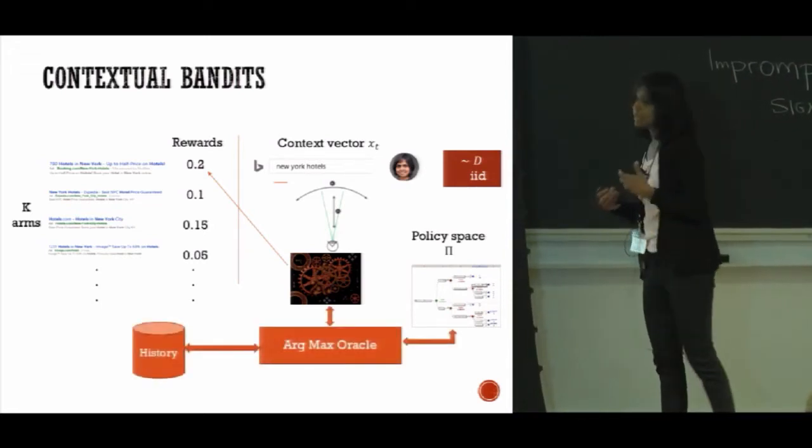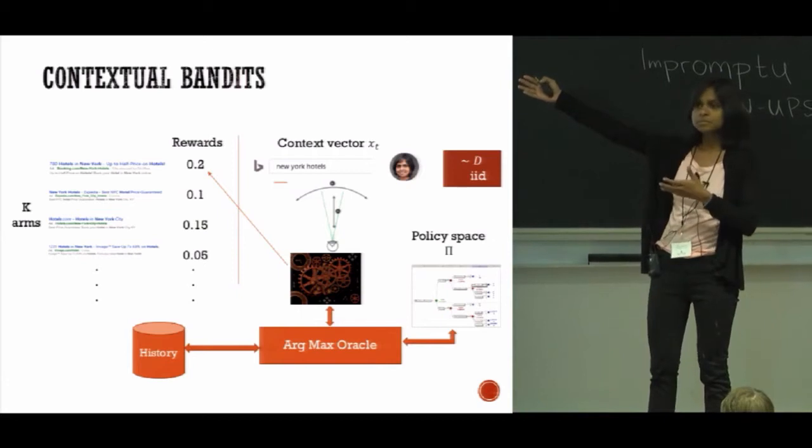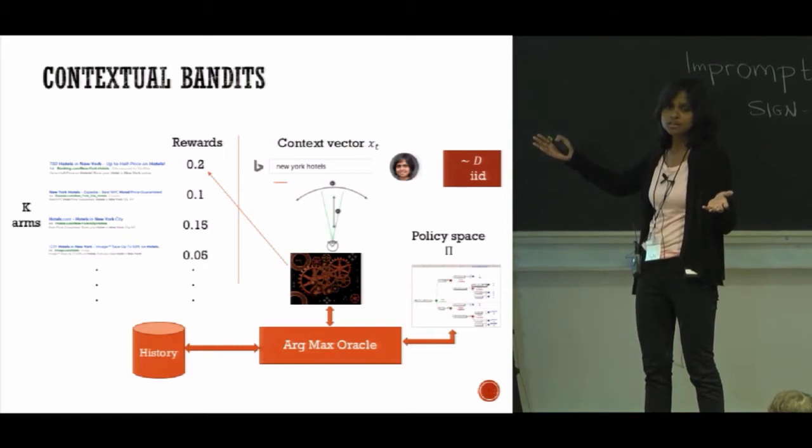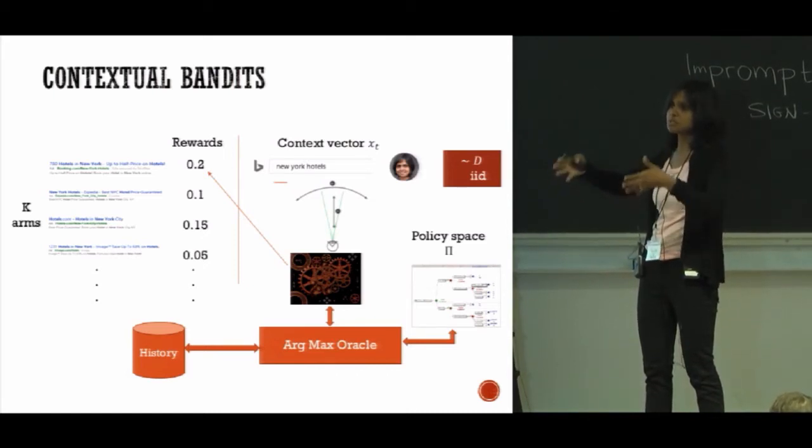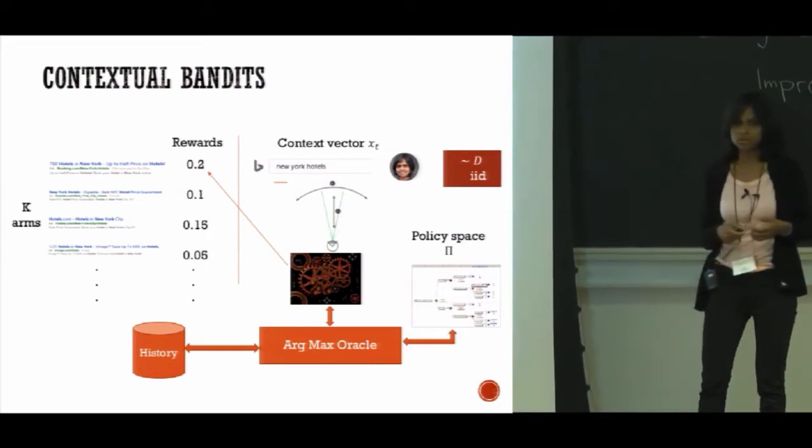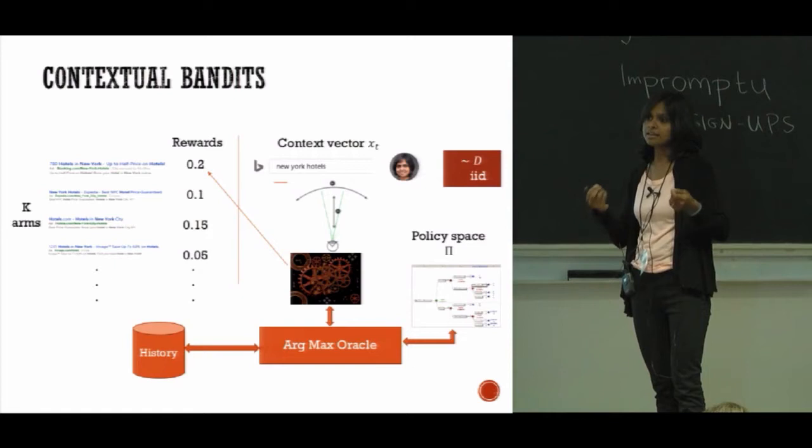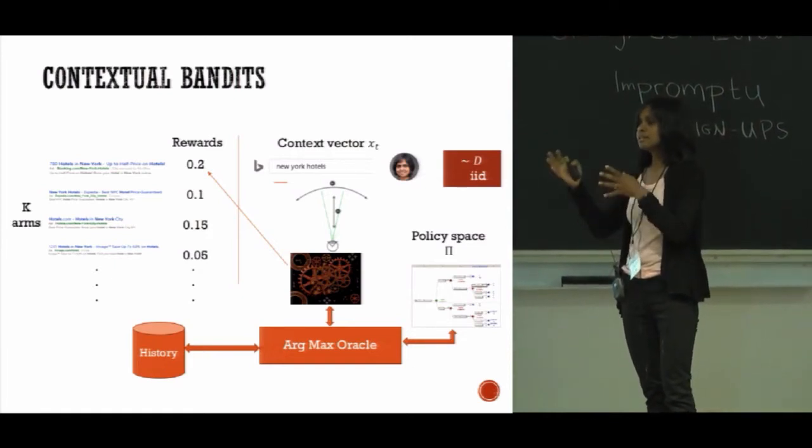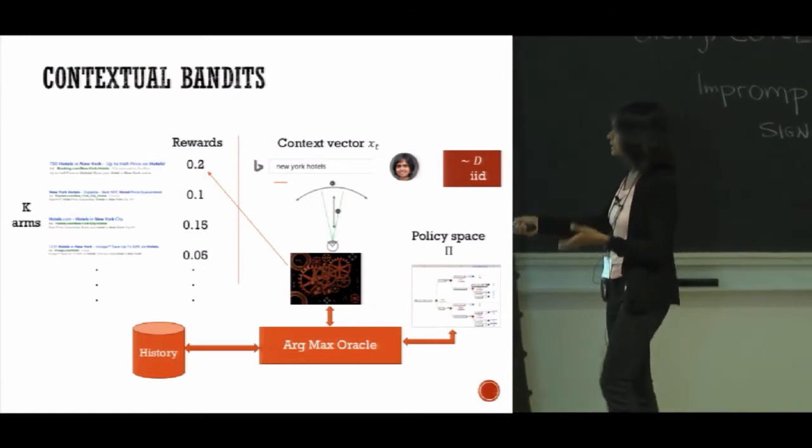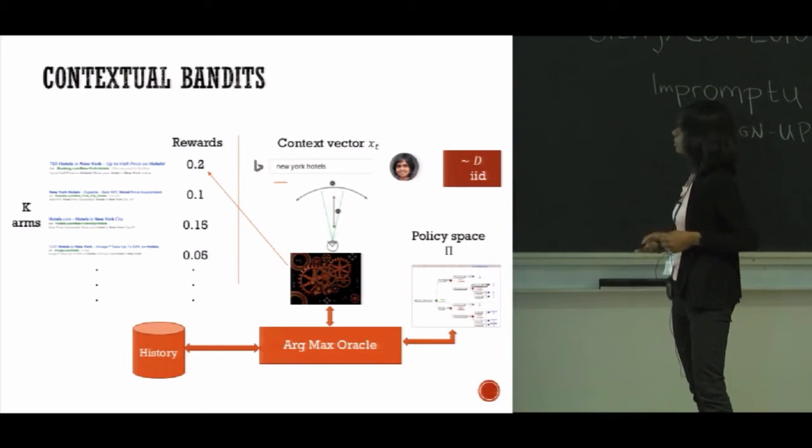One big implementation issue is that these policies are effectively mappings between context vectors and rewards and arms. So they are going to be very large size spaces—they are going to be exponential at least in the dimension of the context. So how do you even specify the access to this policy space? For that it will be assumed that there is an argmax oracle, effectively a training algorithm on this policy space. So if you had an empirical distribution over context and rewards, then for that empirical distribution you can find the best policy. Given historical data, the algorithm is able to compute the best policy fitting that data.